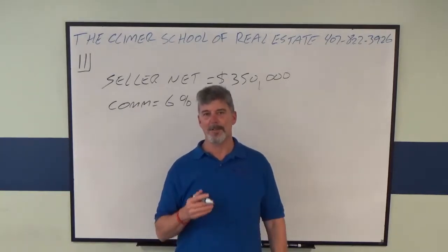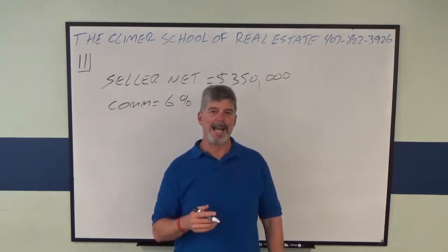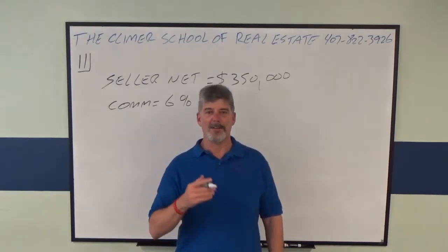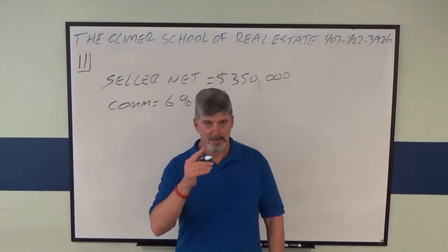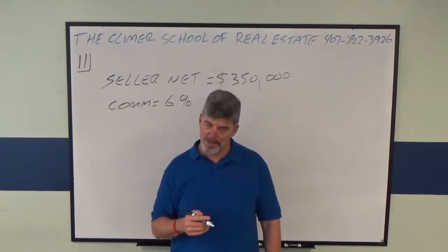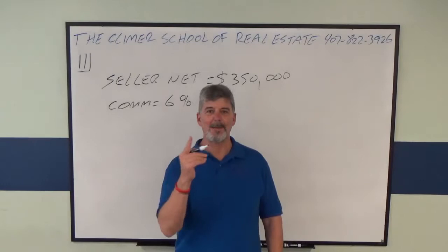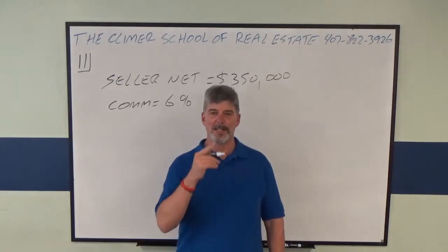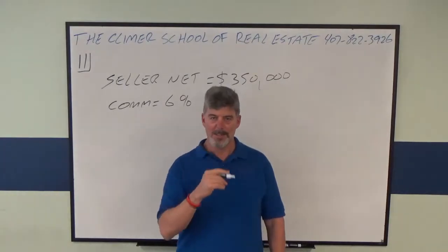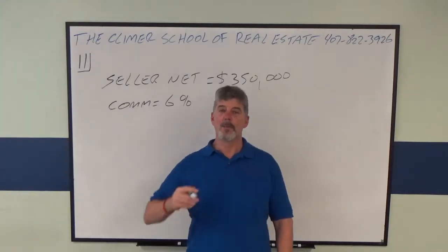Normally you're used to multiplying by a percentage. For instance, you just sold a house for $300,000, commission is six percent — what's your commission in dollars? $300,000 times six percent equals $18,000. We're going backwards this time, so when you go backwards, you divide.